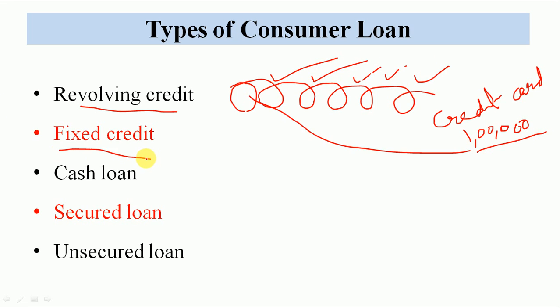Jaisi aapne ek lakh rupay use kar liye, to aapko iski payment karni hoti hai, jaisi aapne payment kar di dubara phir aapko limit mil jayegi. Isko lagataar baar baar use karte rehte ho — that is revolving credit. Doosra hai fixed credit, yeh ek kisam se term loan hi ho gaya, lambe time ke liye loan. Bank aapko loan deta hai fix time ke liye aur yeh within stipulated time vaapis karna hota hai. Phir uske baad hai aapka cash loan — is tarah ke loan ke andar bank ya doosari financial institutions aapko naqad mein paise deti hai, taaki aap apne personal consumption ke liye koi bhi goods kharid lo, jaisi ki personal loan.